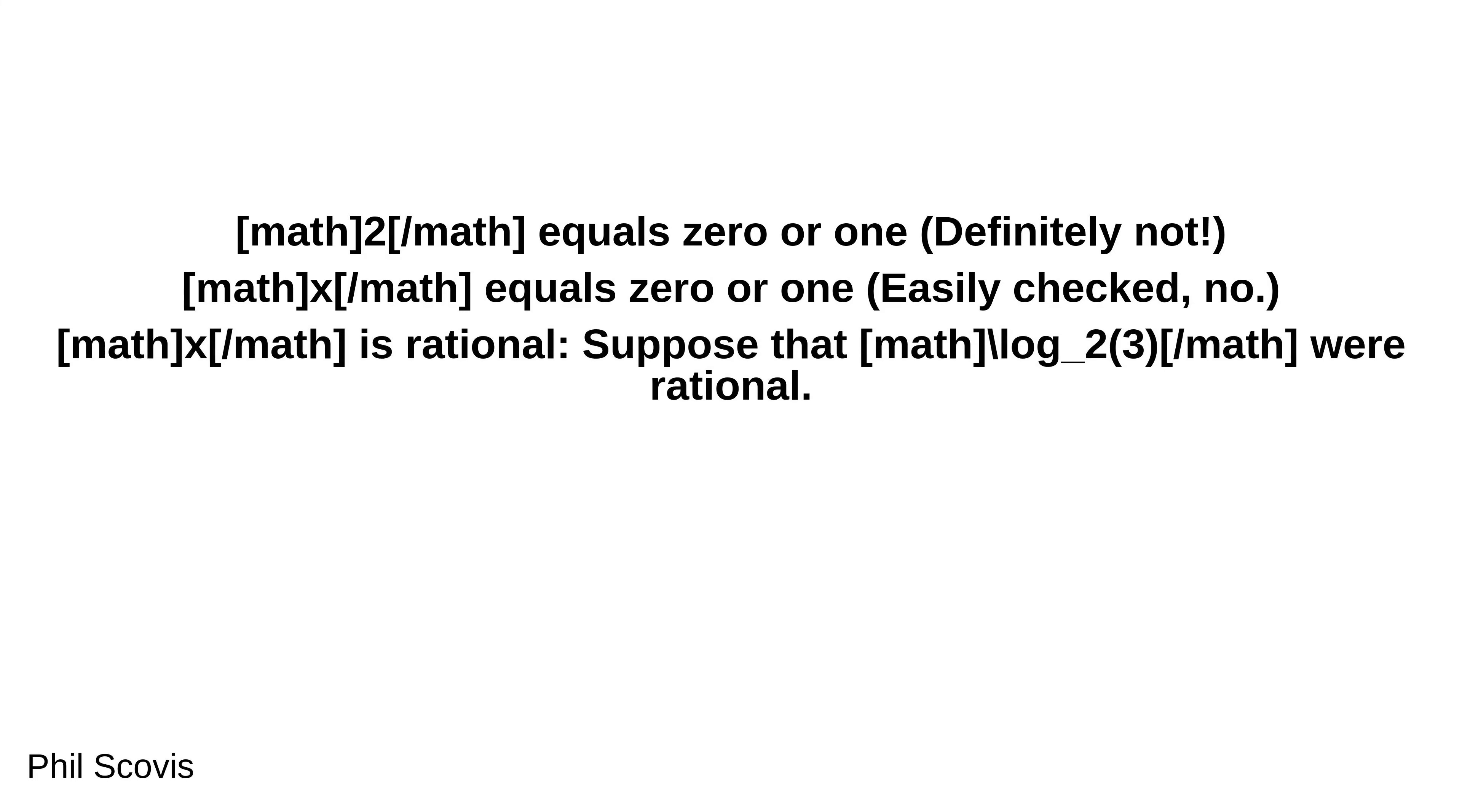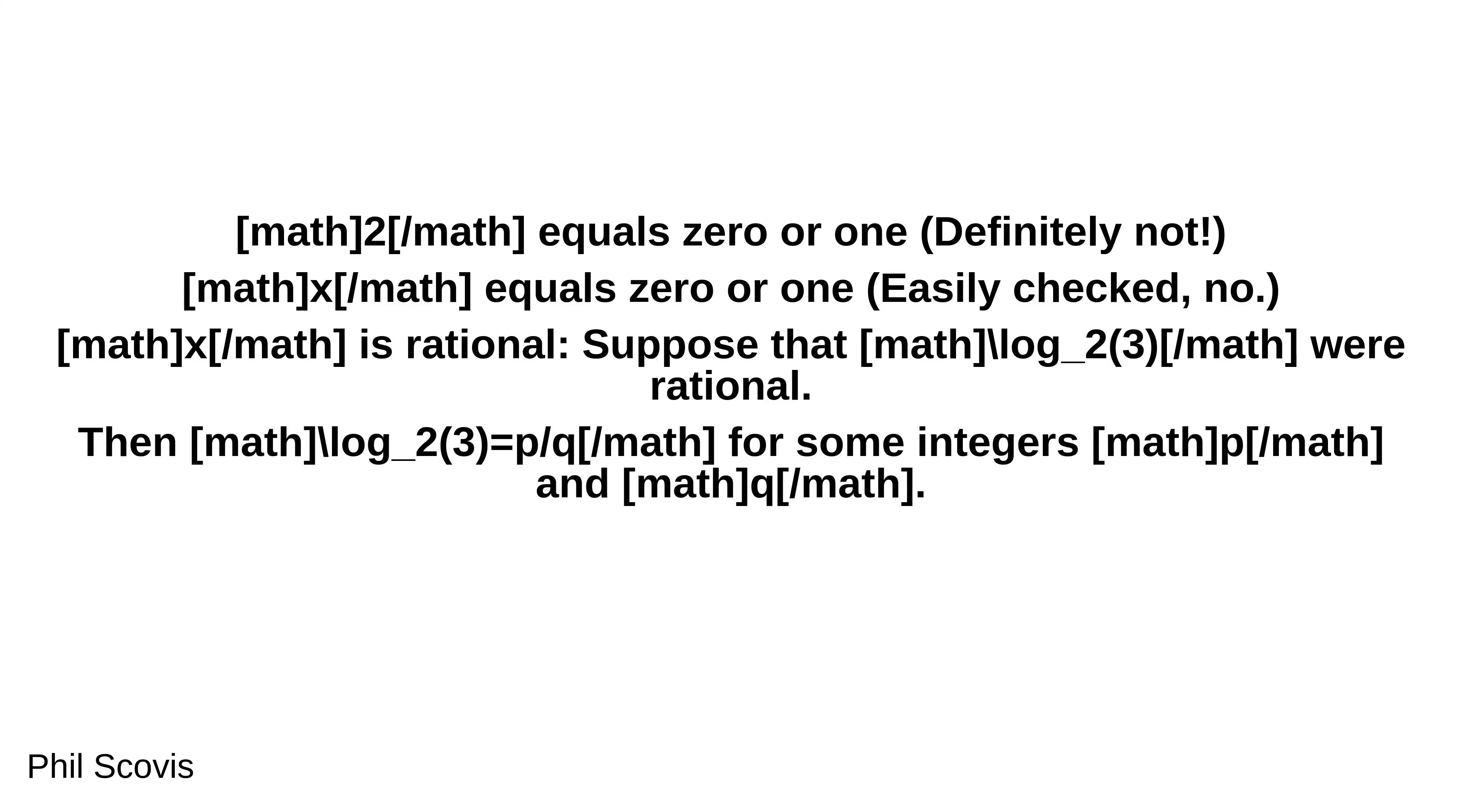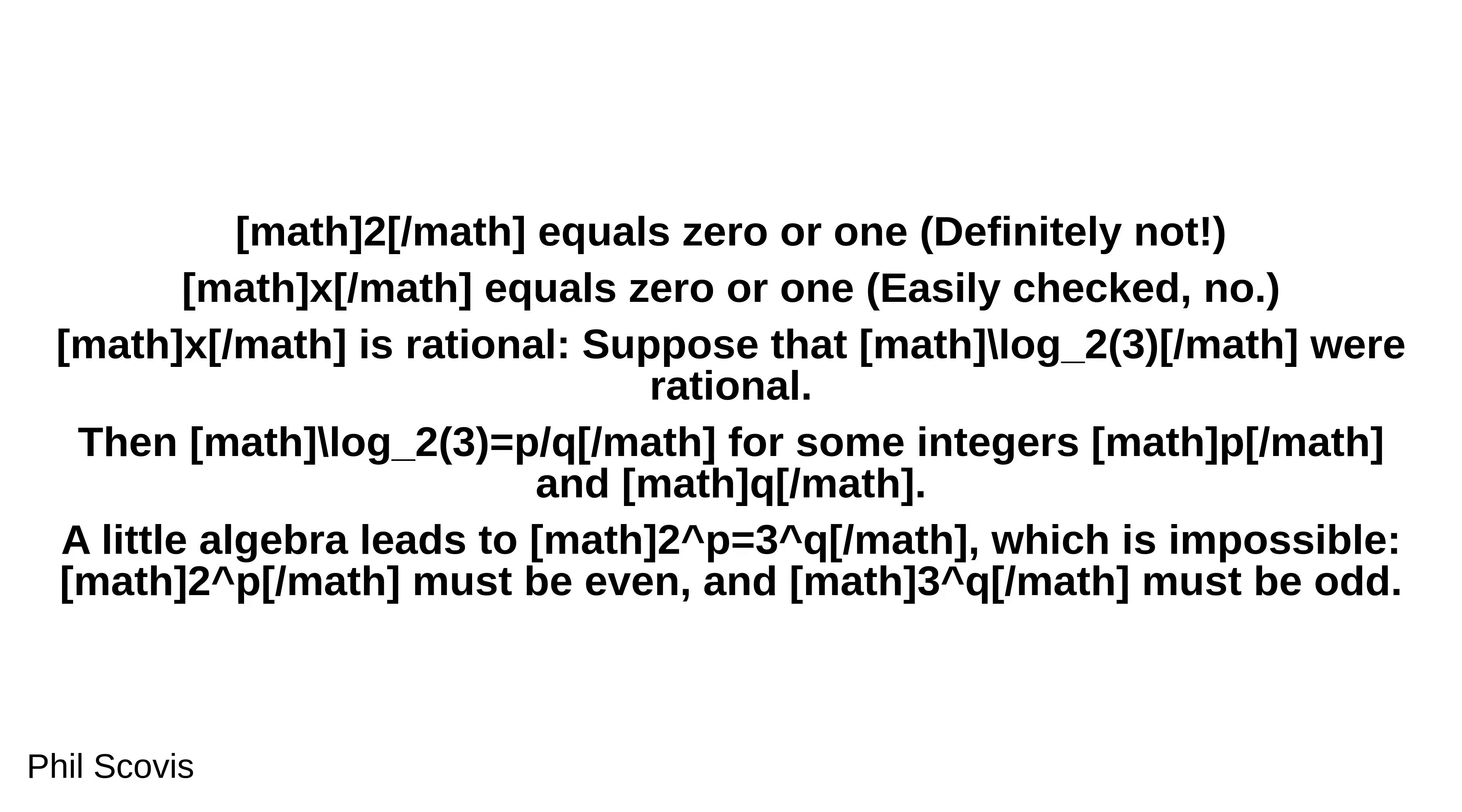x is rational: Suppose that log base 2 of 3 were rational. Then log base 2 of 3 equals p over q for some integers p and q. A little algebra leads to 2 to the power p equals 3 to the power q, which is impossible. 2 to the power p must be even, and 3 to the power q must be odd.